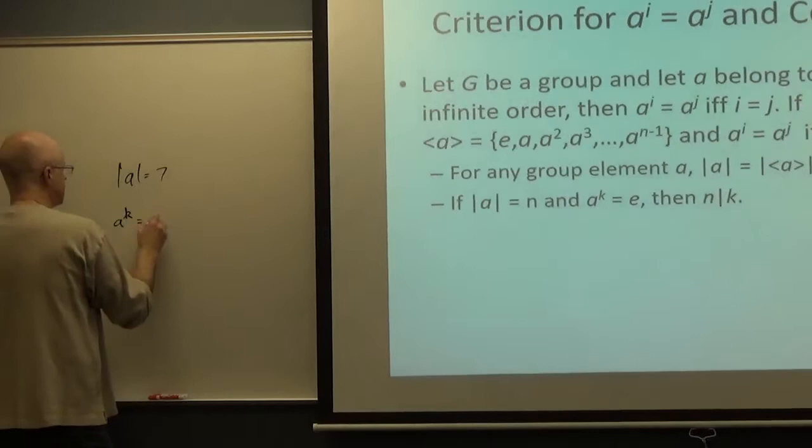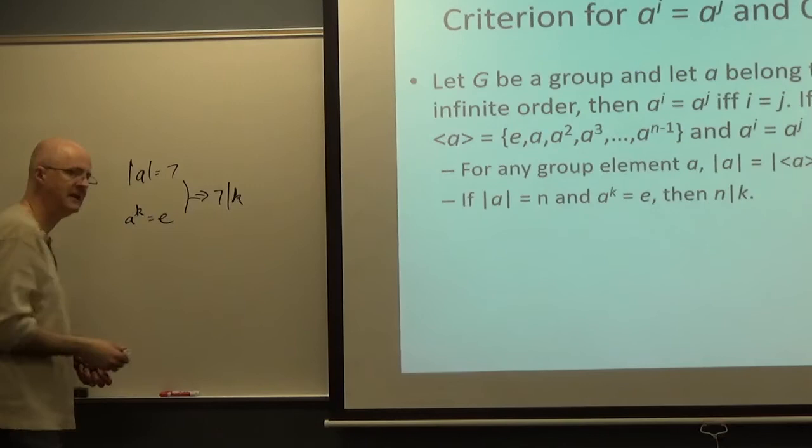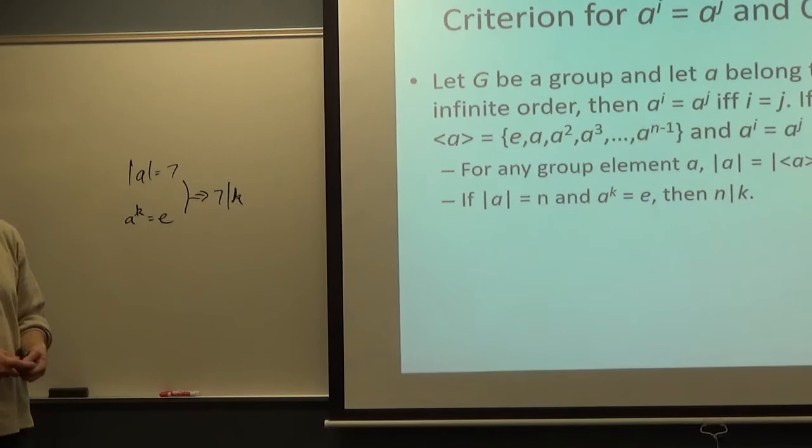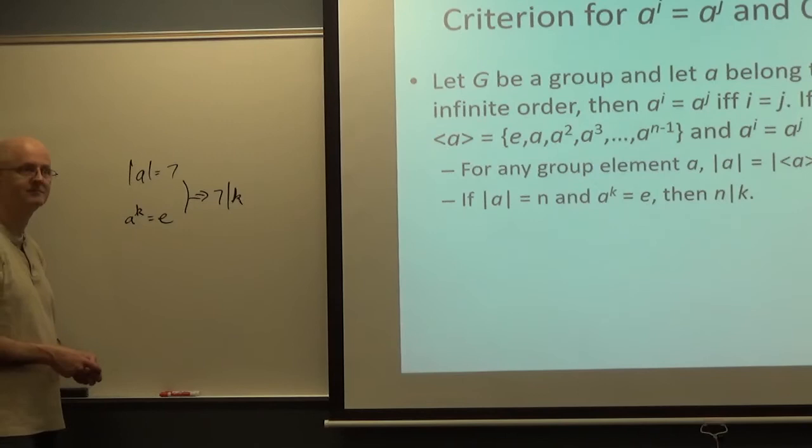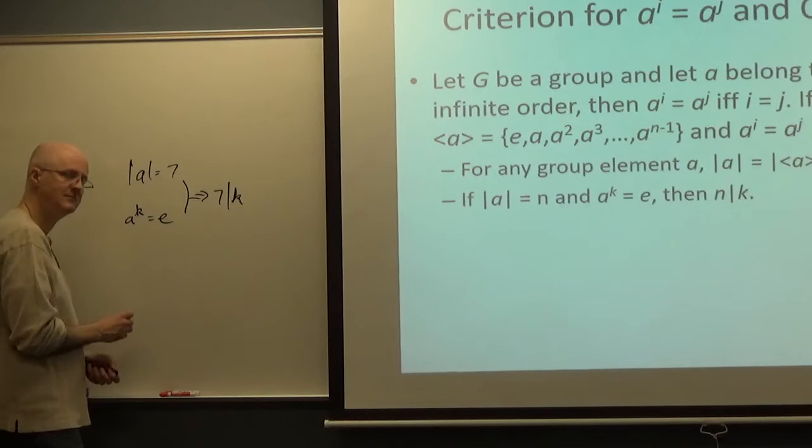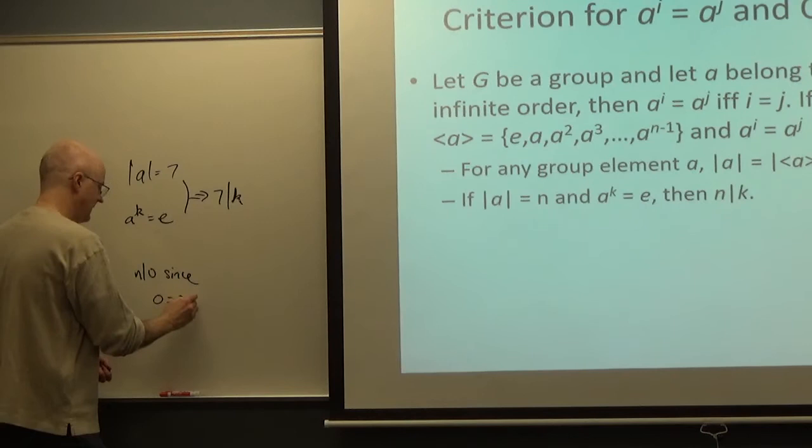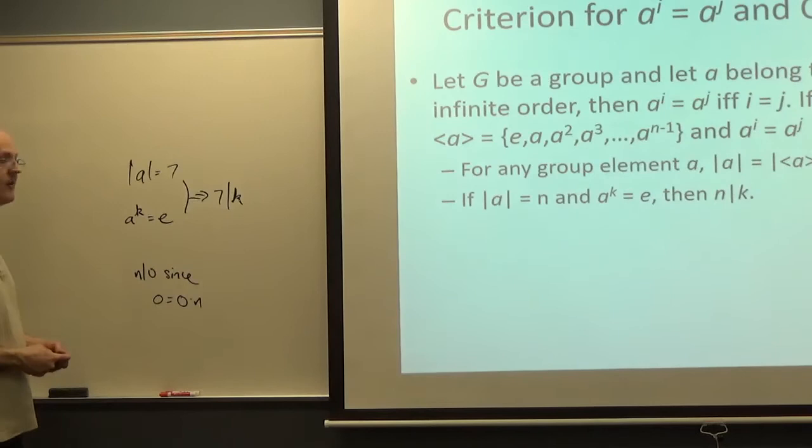What I said there, the past 30 seconds was too fast. You can rewatch the video at about 25 to 30 minutes in. If the order of a is N, and a^K equals E, then N divides K. For example, if the order of a is 7, and a^K is E, then 7 divides K. K could be 7, it could be 14, it could be 21, it could be 28. It could be negative 7, or negative 14, or negative 21, or negative 28, etc. It could be zero. So it does divide zero. Anything divides zero. K could be zero as well.